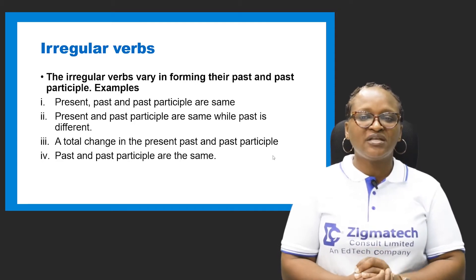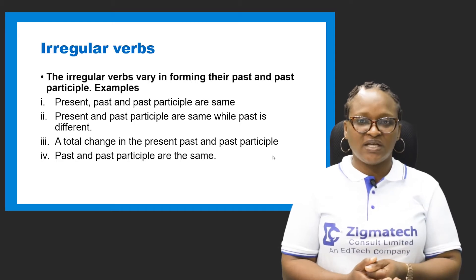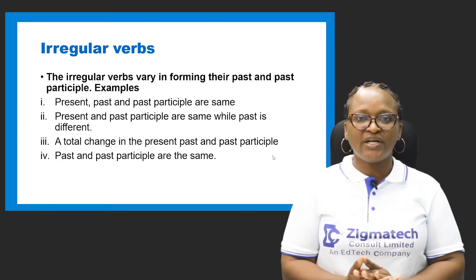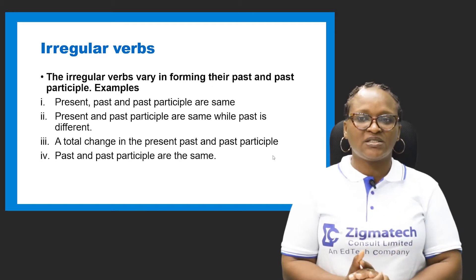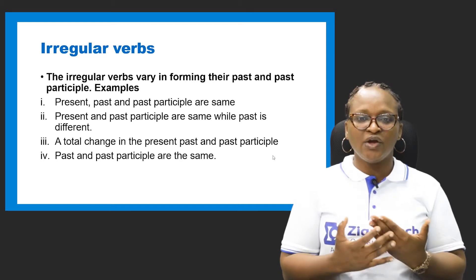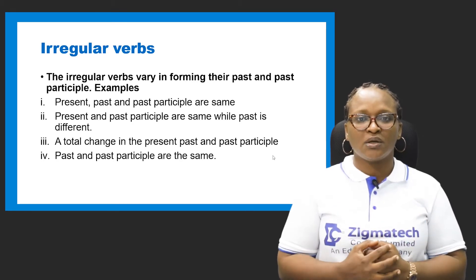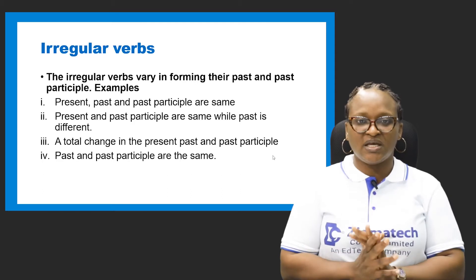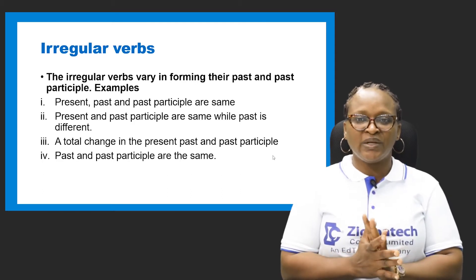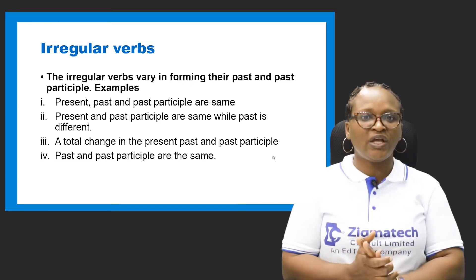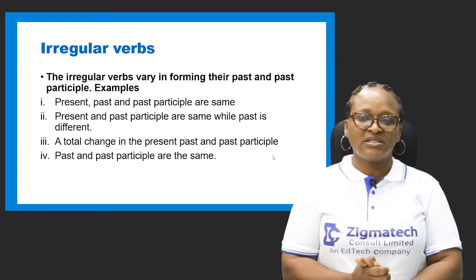An example is the word 'split.' It would be wrong to say 'I splitted the oranges into two.' The word split in its past and past participle retains the same form: split, split, split. 'I split the orange.' 'I split the orange yesterday.' 'I will split the orange tomorrow.' So it remains the same.